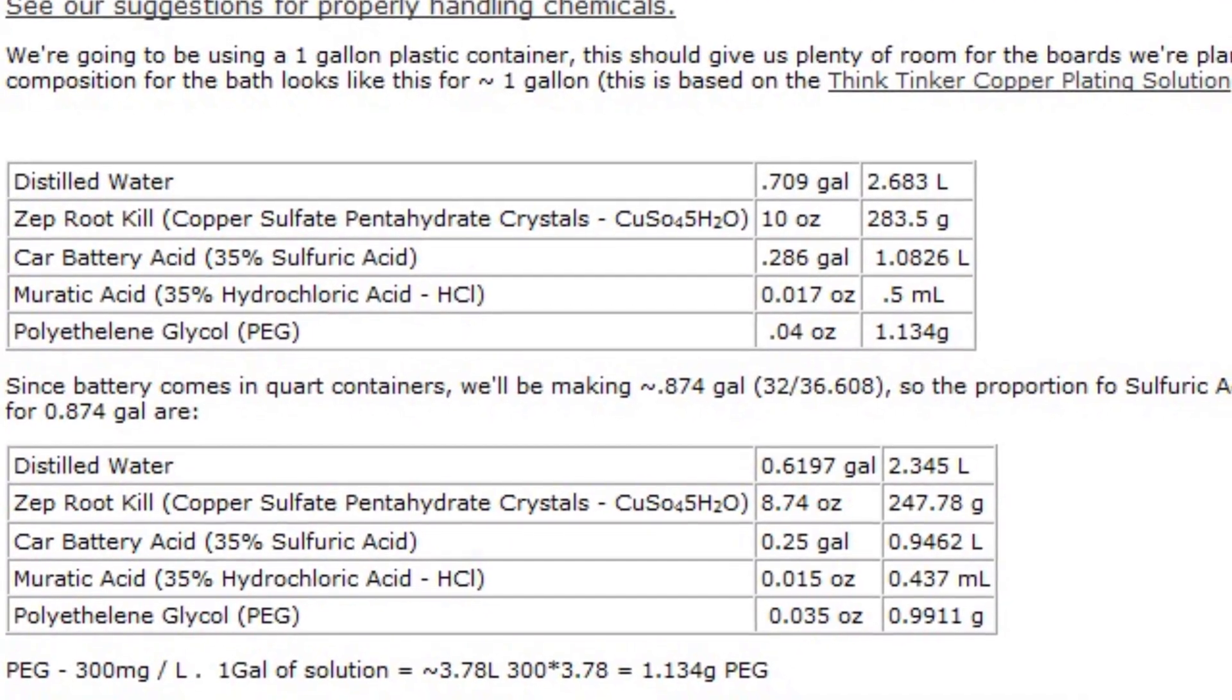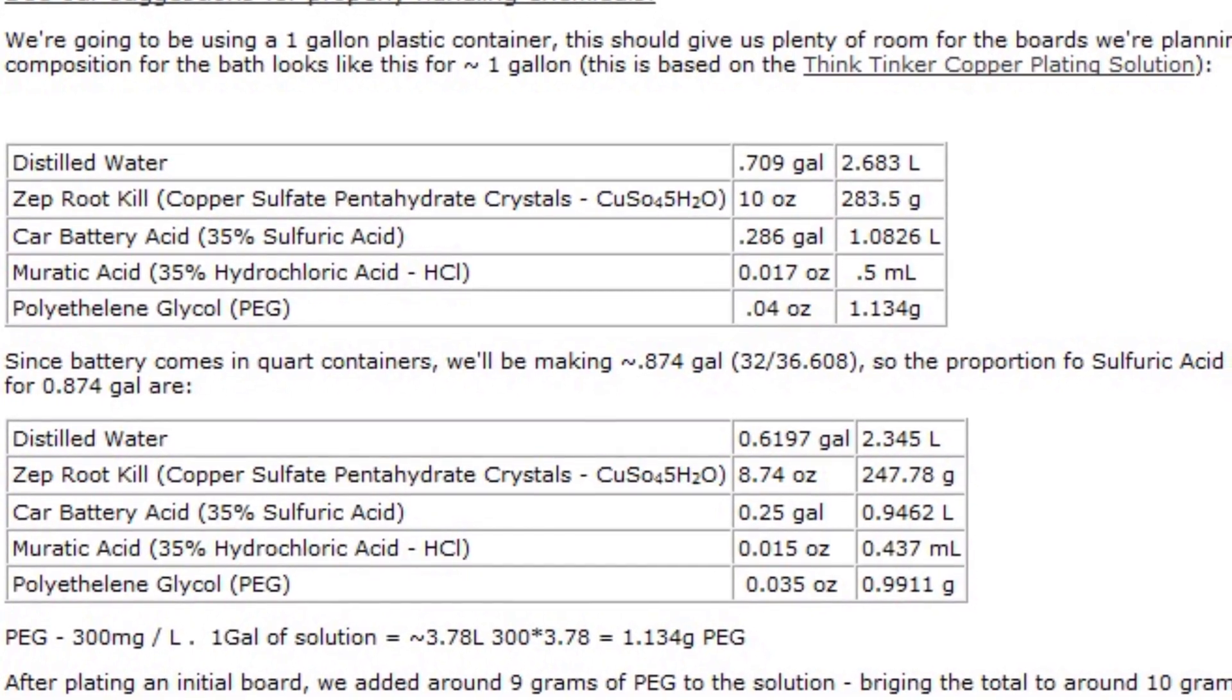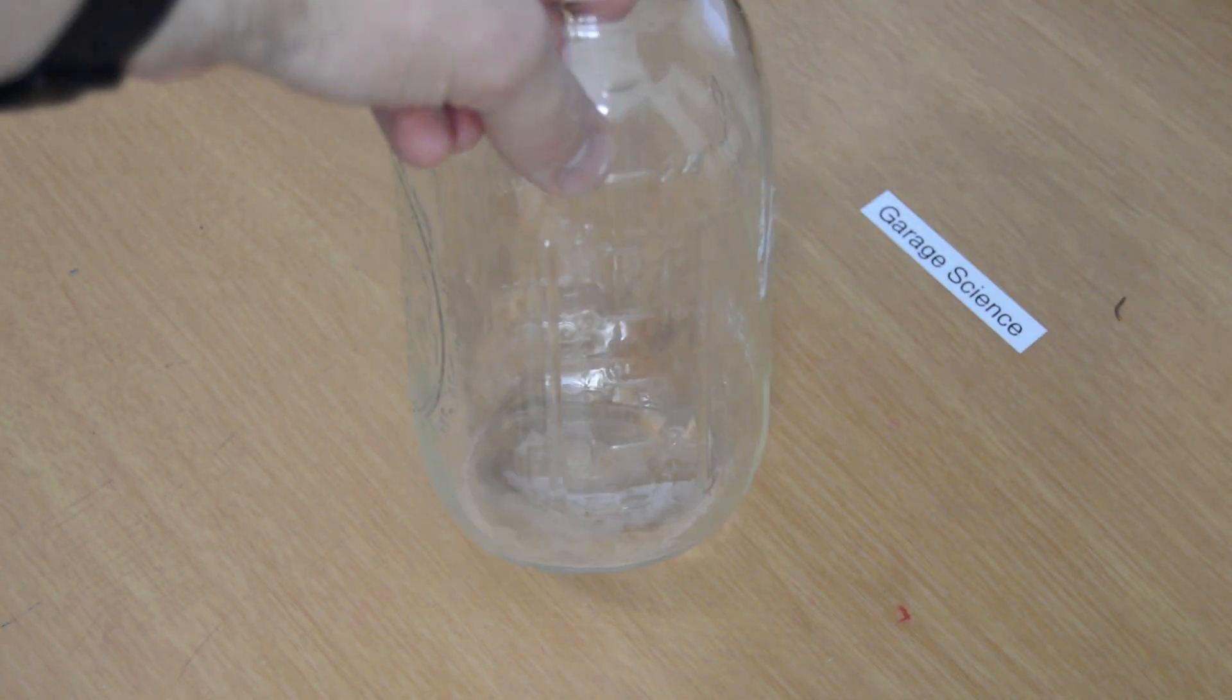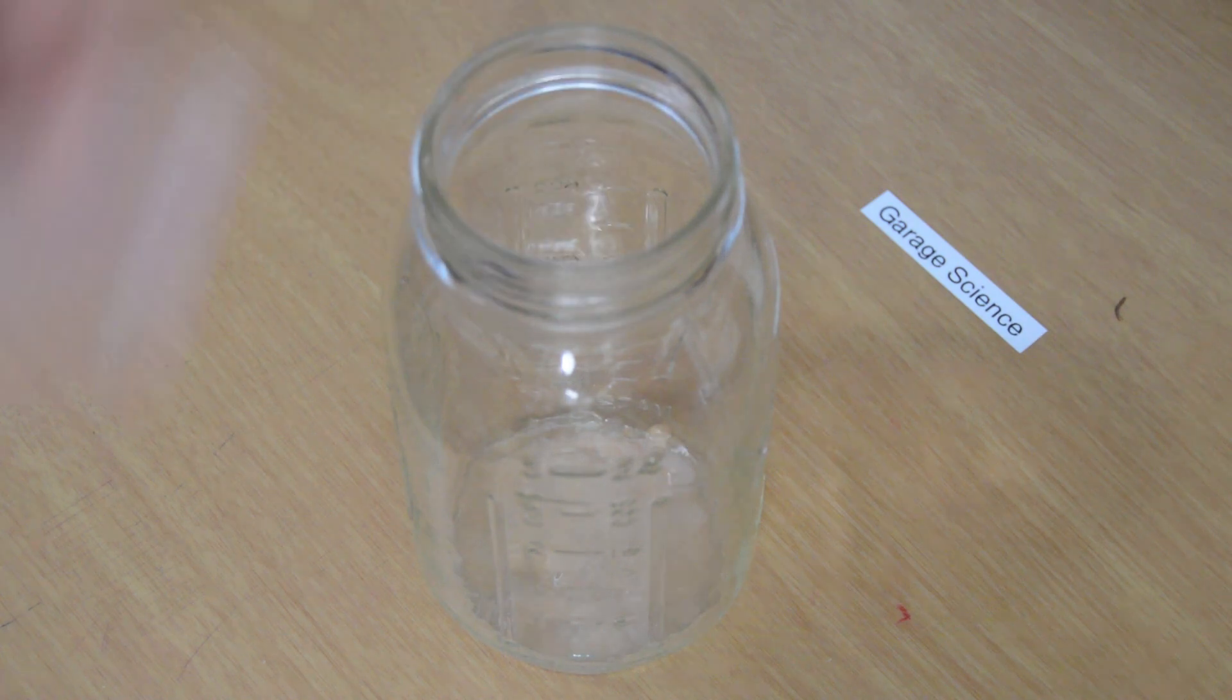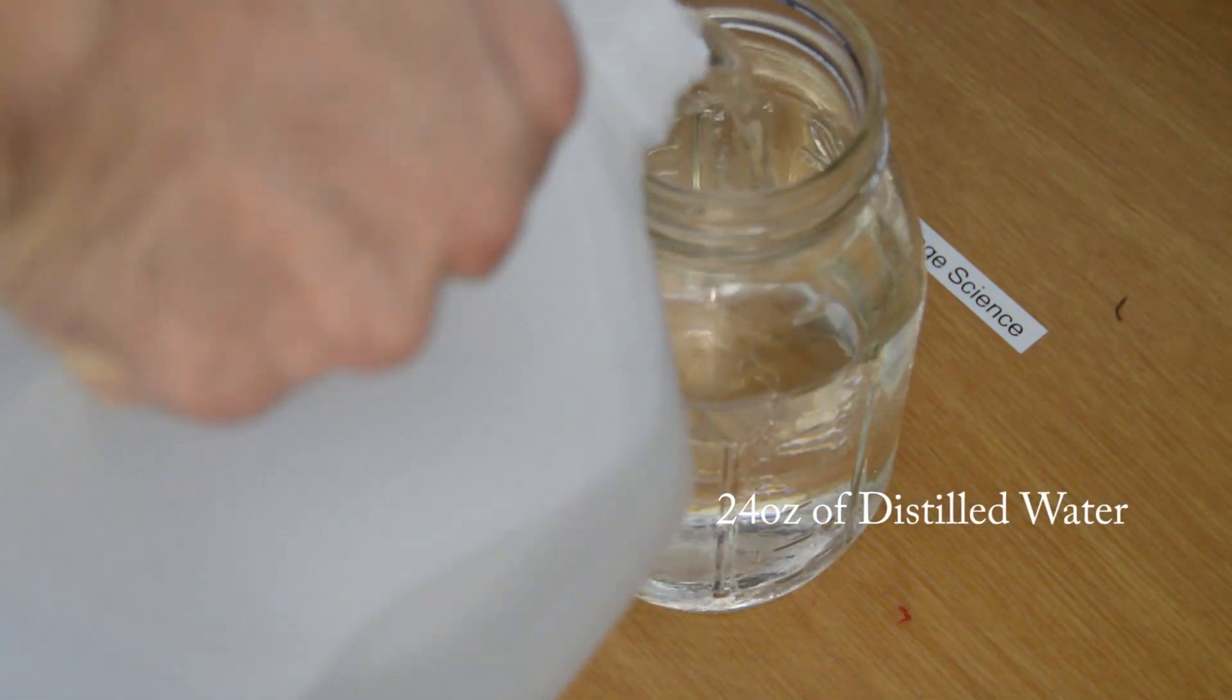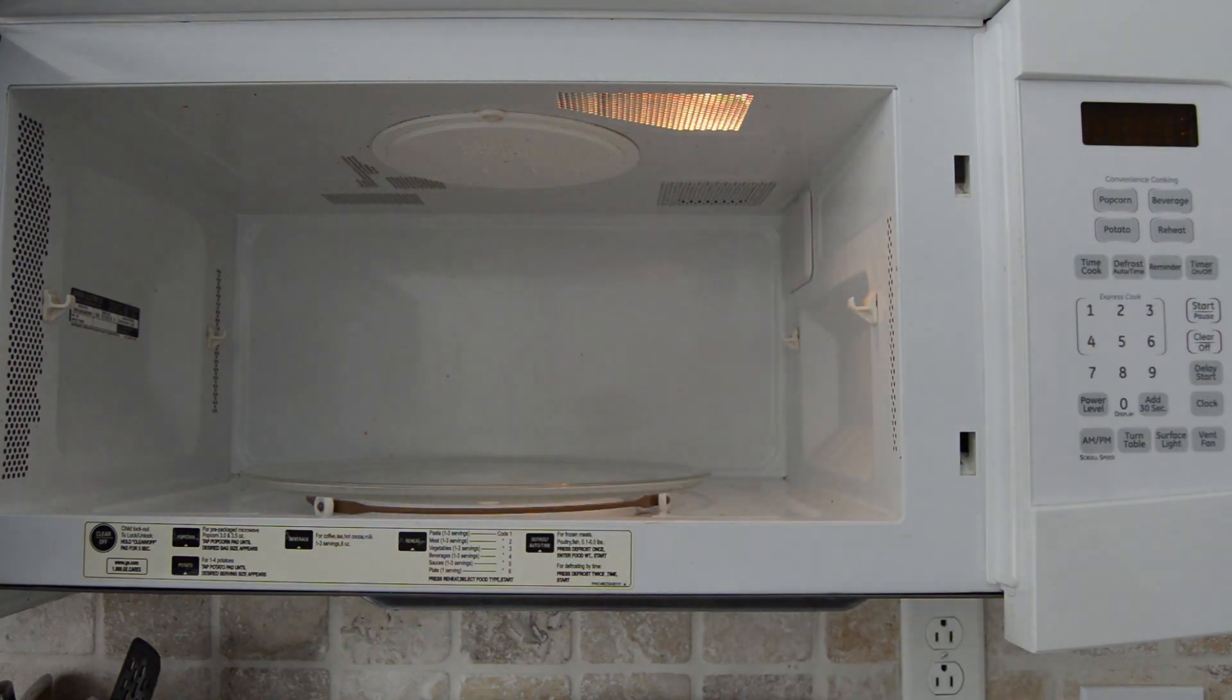This recipe is based on the same one used in the last copper plating video I made. I'll be making 24 ounces of electrolyte in a 1 quart mason jar. Start by pouring 24 ounces of distilled water into the mason jar. Then heat it in a microwave for 4-5 minutes. Making the water hot will allow the copper sulfate to dissolve faster.